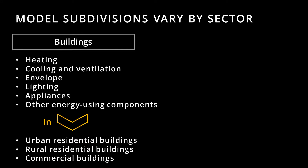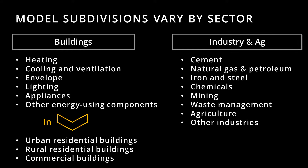For example, in the building sector, buildings are broken down into different building components, such as heating systems and lighting systems. Buildings are also subdivided by building type. Unsurprisingly, the industry sector is subdivided by industry. The EPS tracks emissions from fuel use, as well as process emissions — those emissions unrelated to fuel combustion, such as CO2 emitted from carbonate rock that is broken down to produce clinker, one of the main components of cement.